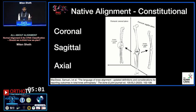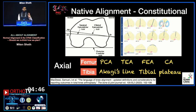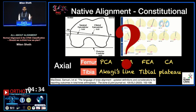What is native alignment — constitutional alignment — can be thought of in three planes. In the axial plane, we try to place the components and assess femoral torsion using the PCA, the trans-epicondylar axis, or the cylindrical axis, and the tibia using the shape of the tibial plateau or different forms of Akagi's line. We know all of this has a lot of variance, as Dr. Moulaji has published in the Indian population as well.